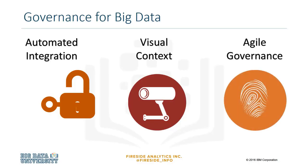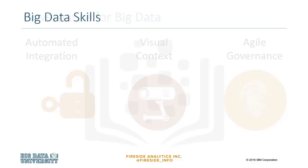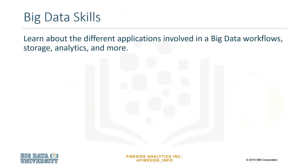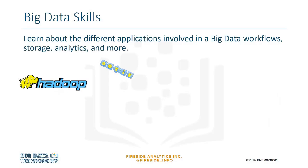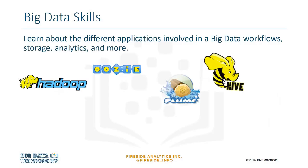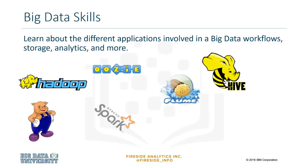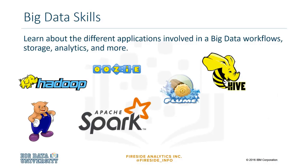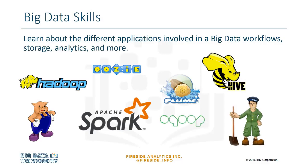Looking at these three things provides businesses with a quick way to profile the level of importance of the data and therefore the amount of security required to protect it. Some of the applications used in big data are Hadoop, Oozie, Flume, Hive, HBase, Apache Pig, Apache Spark, MapReduce and YARN, Sqoop, Zookeeper, and Text Analytics.